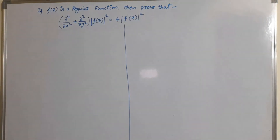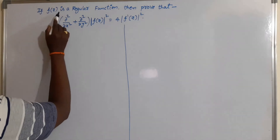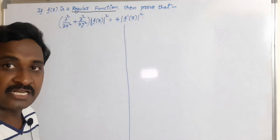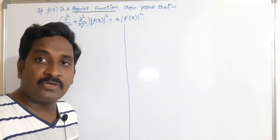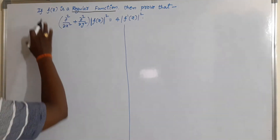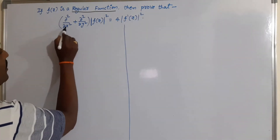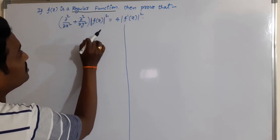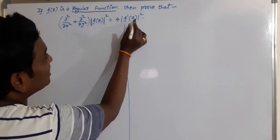This is the statement of the problem. If f(z) is a regular function, then prove that ∂²/∂x² + ∂²/∂y² of |f(z)|² is equal to 4 times of |f'(z)|².